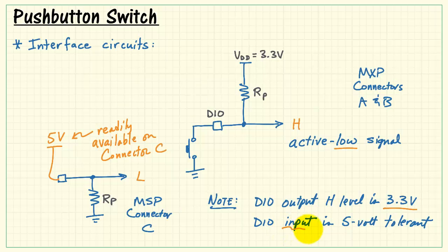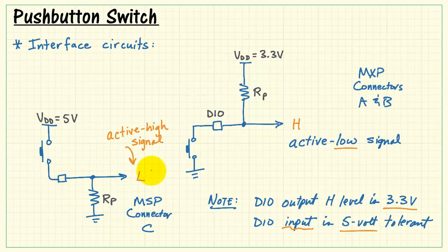Not to worry though, because the DIOs, when they are in input mode, are 5 volt tolerant. So even though they don't produce 5 volts, it's okay to apply 5 volts as an input level. This is how we would connect the push-button switch on the MSP connector. Just connect that other end of the switch up to 5 volts, and you get an active high signal.